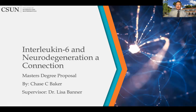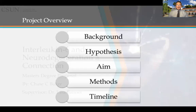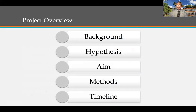Welcome, everyone. This is my proposal on interleukin-6 and neurodegeneration. Today we'll be looking at the background of metabolic disorders associated with the neurodegenerative diseases they're correlated with, and the information that led me to this investigation. Second, we'll go over a hypothesis I want to test, and third, the question surrounding those hypotheses. Fourth, the methods I chose, and last, my timeline events and preliminary data.